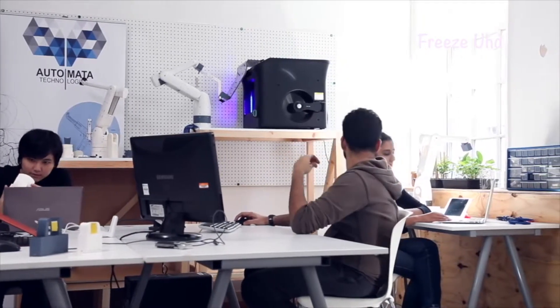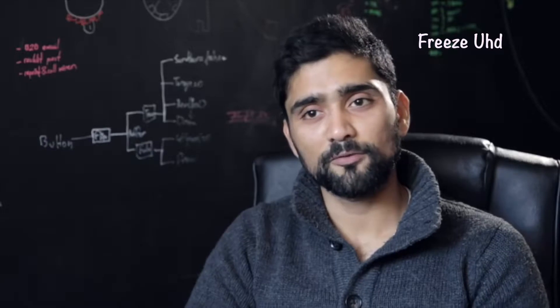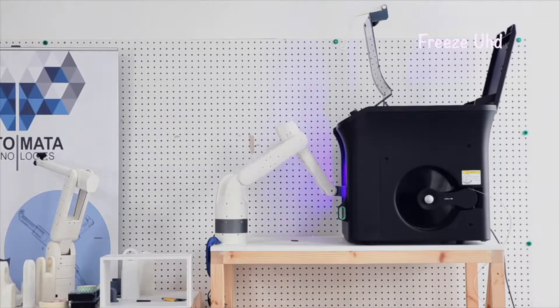For example, one of the areas where we ourselves need a process automation is currently all our prototypes are 3D printed, so one of the tasks that was extremely painful for us was to come in at 3 in the morning or 6 in the morning to take out prints from the printer and put the next print on, and that's something we are able to automate using our robots.